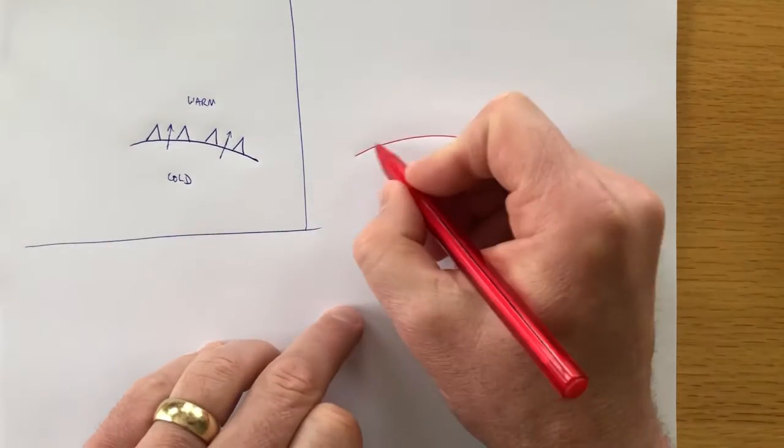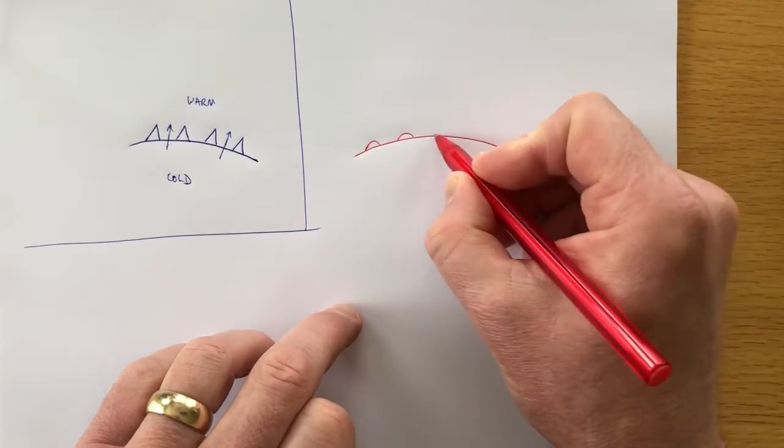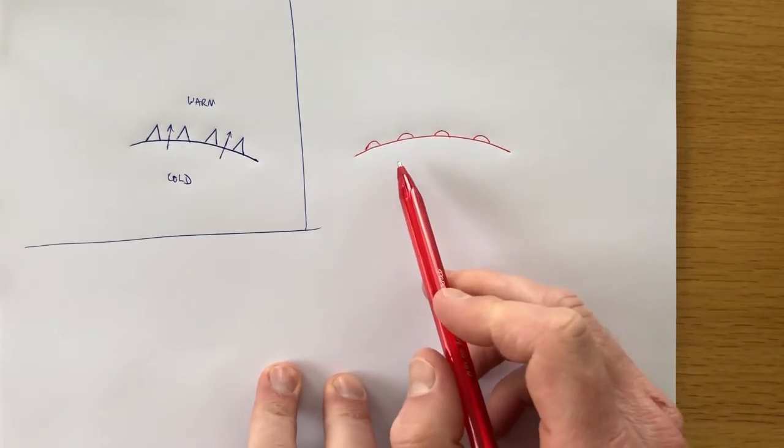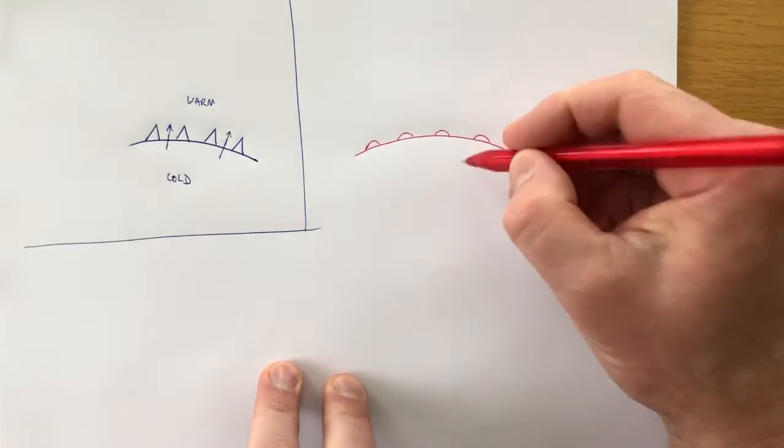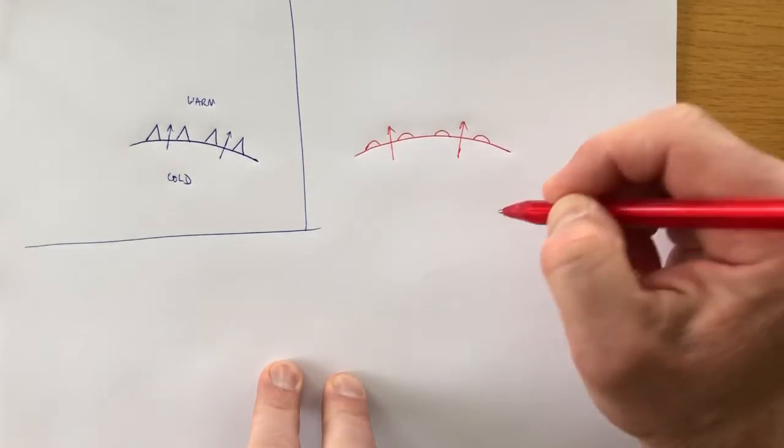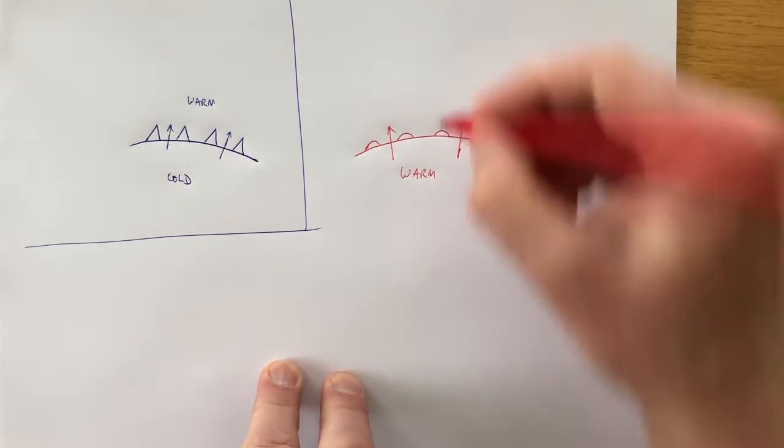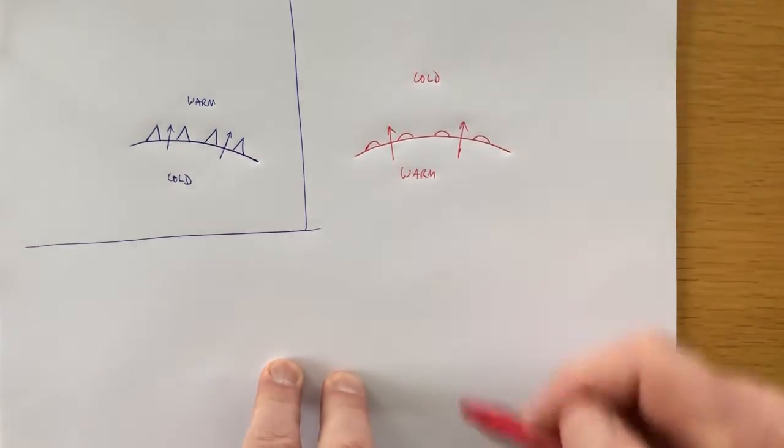Second one is a warm front. A warm front is going to be drawn with red because it's warm, and you'll see these are half circles instead of triangles. Same principle applies though. The symbol is on the top of the line, that means the front is moving that way. And again, it's the front of warm air, which means the cold air must be up here.